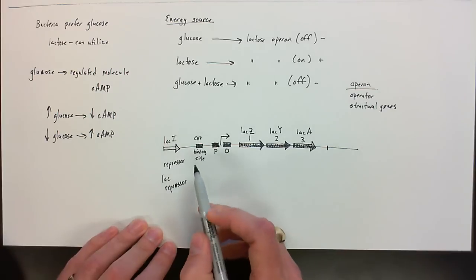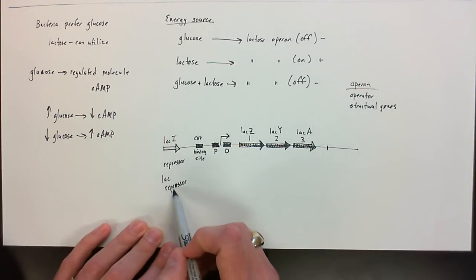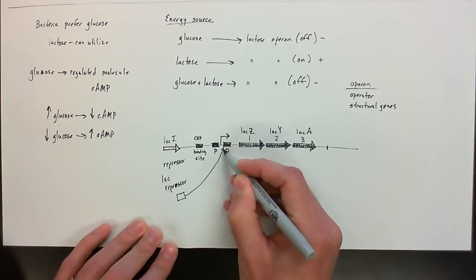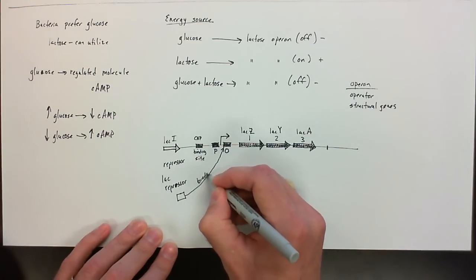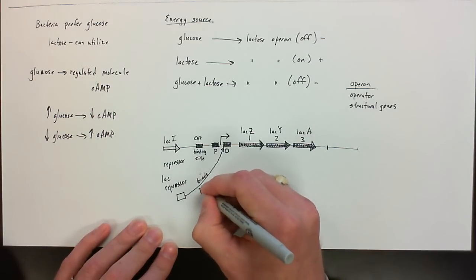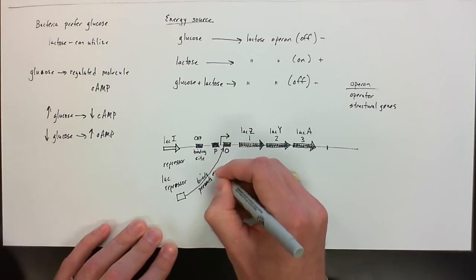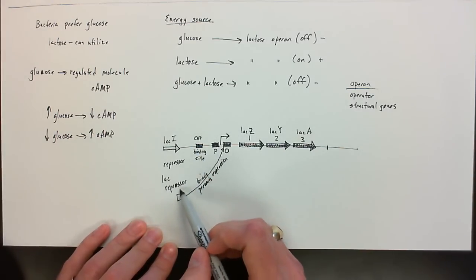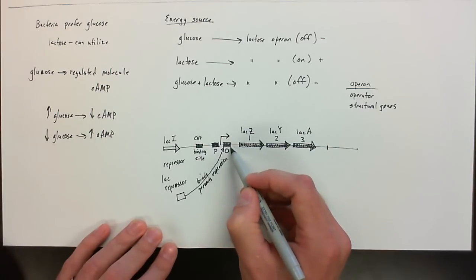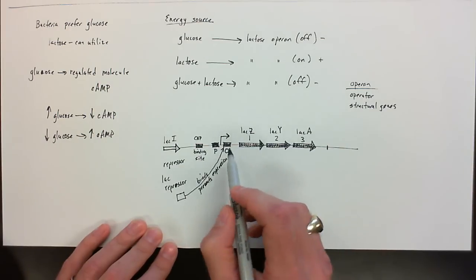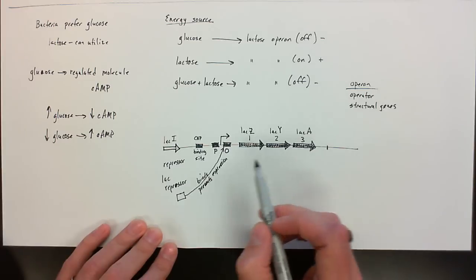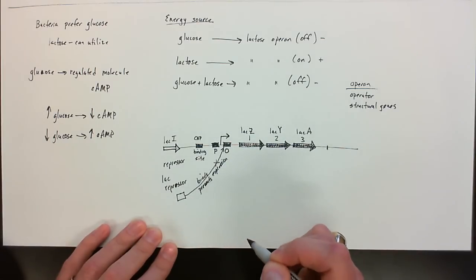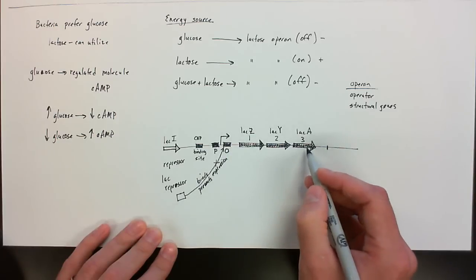So what it's going to do is when this gene is made, it's going to produce a protein, so I'm going to draw that as a square, that binds to the operator. So when it's binding, it prevents expression. So what we have to kind of envision here is when this lac repressor is produced, it binds to the operator and is physically repressing it from making these structural genes. So what we're going to see is we need to somehow prevent that repressor from binding so we can turn on these structural genes.